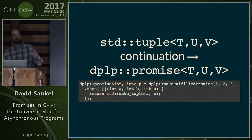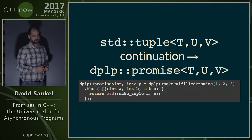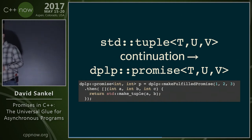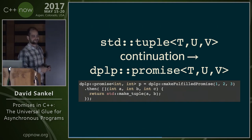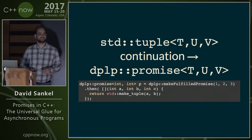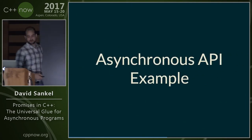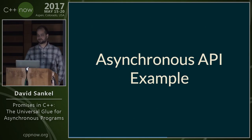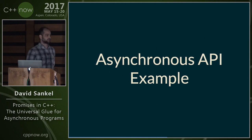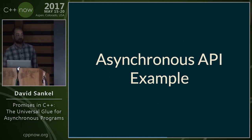Question: what if the continuation throws? The promise gets rejected. Now we understand how this data structure works — it's very simple: one member function, one constructor, a couple of basic operations. Let's see how we would use this in actual code.